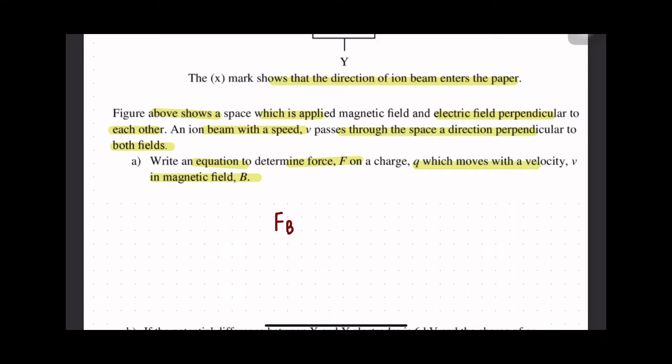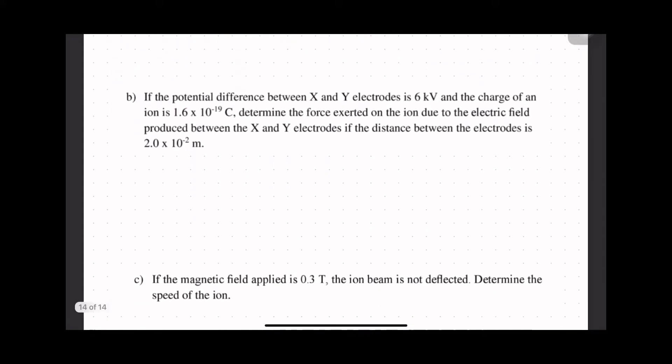Part b: If the potential difference between X and Y electrode is 6 kV and the charge on an ion is 1.6 × 10^-19 coulomb, determine the force exerted on the ion due to the electric field.